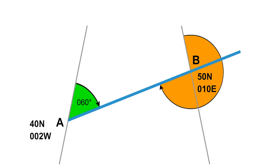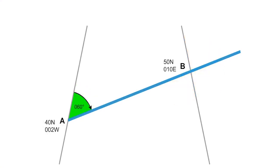Alternatively, if you prefer the definition that convergency is the angle of inclination between two selected meridians, then we can do it this way. Draw in a construction line at B parallel to the meridian at A. The meridian at A and the construction line are parallel. So the angle N is also 060 because it is a corresponding angle to the initial great circle track. Therefore, the angle from the construction line round to the return track B will be 060 plus 180, an angle of 240 degrees measured from the parallel construction line.